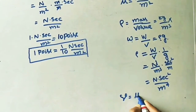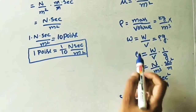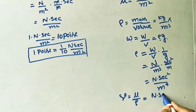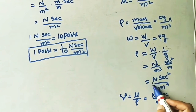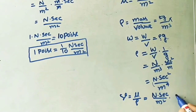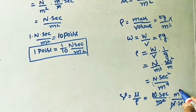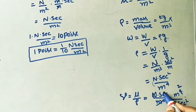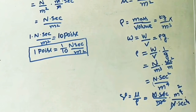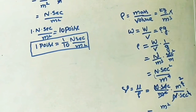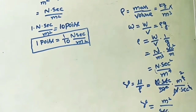Substituting the units: mu is N·s/m², and 1/rho gives m⁴/(N·s²). Newtons cancel, meters give m², seconds give 1/s. The final units for kinematic viscosity are meter squared per second (m²/s).